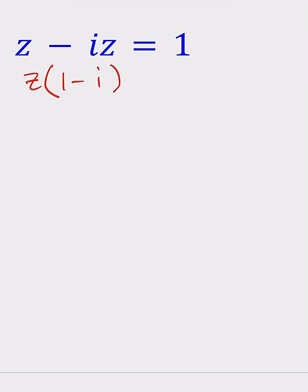We get 1 minus i, and then we can go ahead and divide both sides by 1 minus i to get the z by itself. So z becomes 1 over 1 minus i.